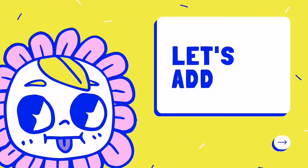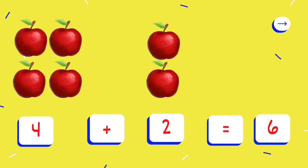Let's add together. How many apples in the first group? Yes, 4 apples. How about the second group? 1, 2 — 2 apples. That means 4 plus 2 equals 6.